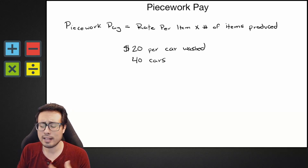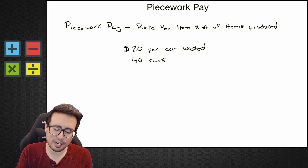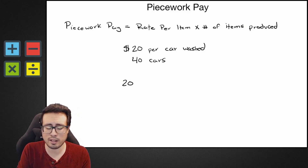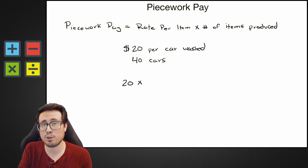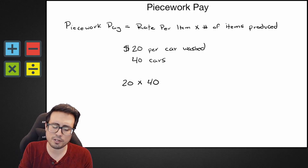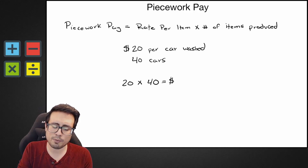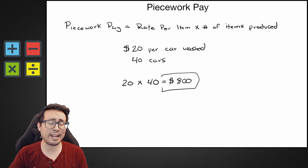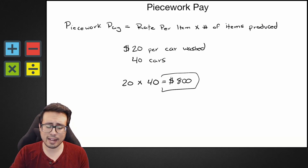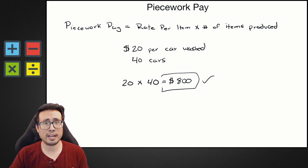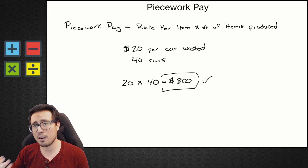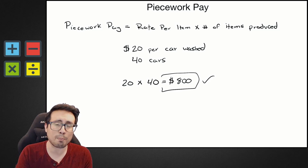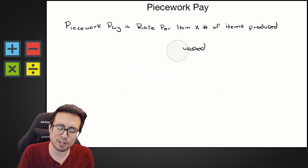The way we calculate that is to plug numbers into our equation. Rate per item is how much I get per item, and the answer is $20, because we get $20 per car we wash. We multiply it times the number of items produced — I washed 40 cars. So 20 times 40 gives you 800. Our gross piecework pay is $800. If you got that, excellent — good job. It's actually pretty simple; it's just a matter of understanding the equation and plugging in the right numbers.